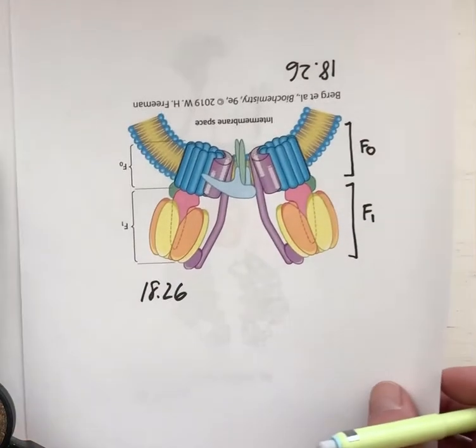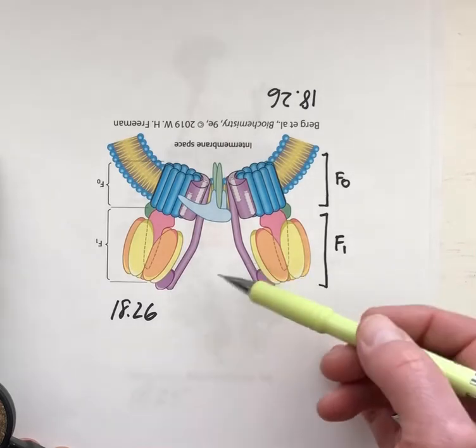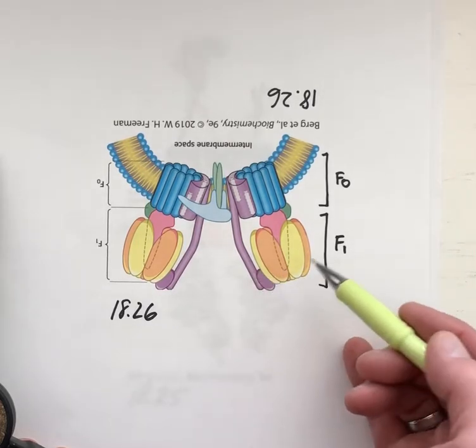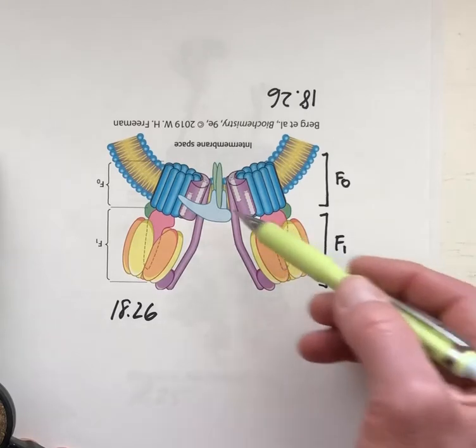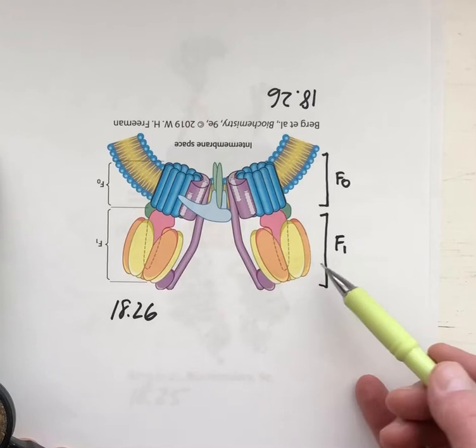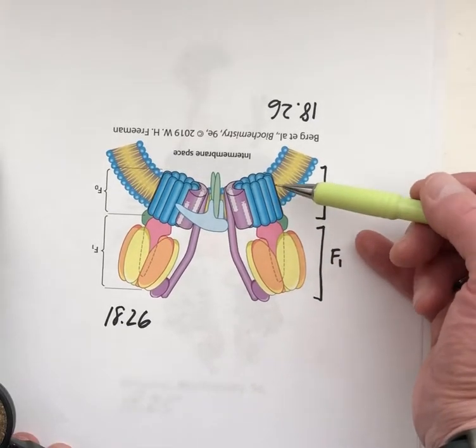Figure 18.26 shows an overview of the ATP synthase. It's now known to be a dimer of units, and we know this from this new structural method called electron microscopy, which can see things that are very large.